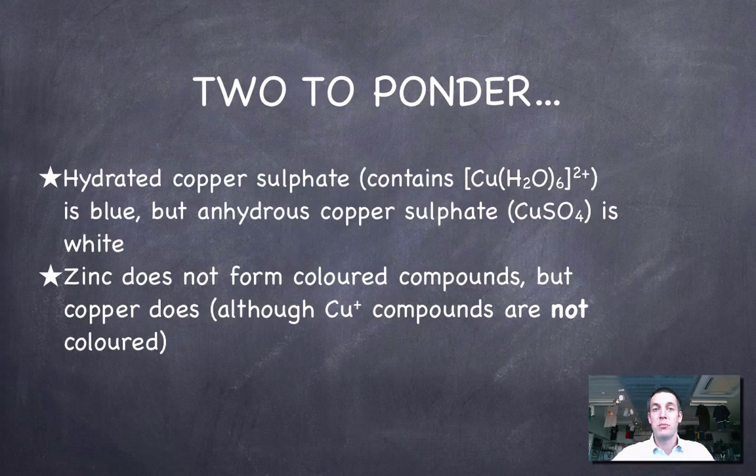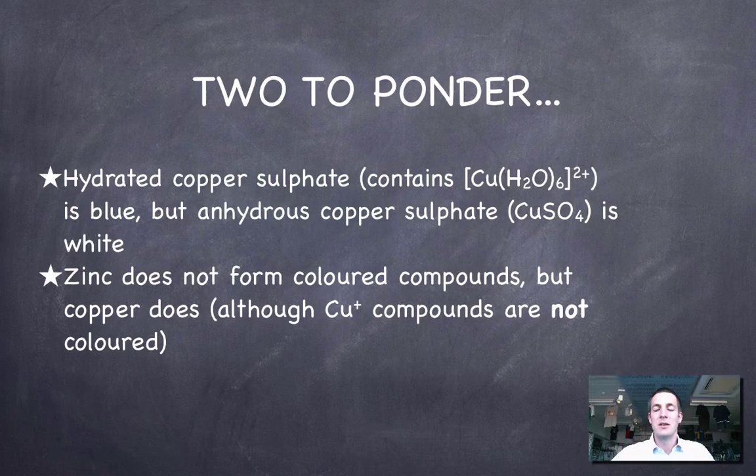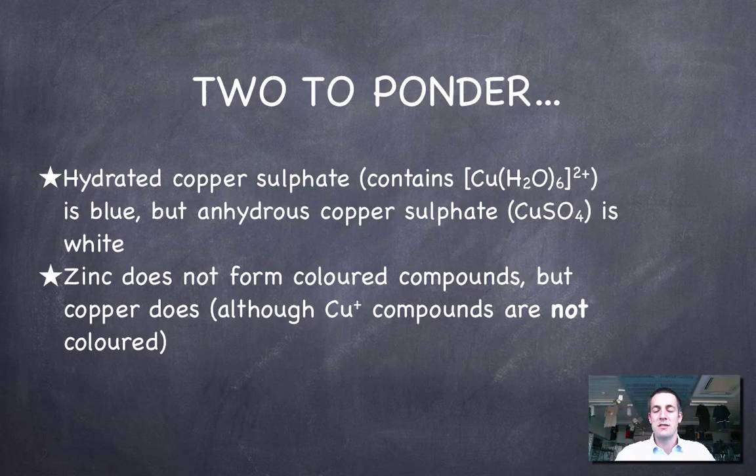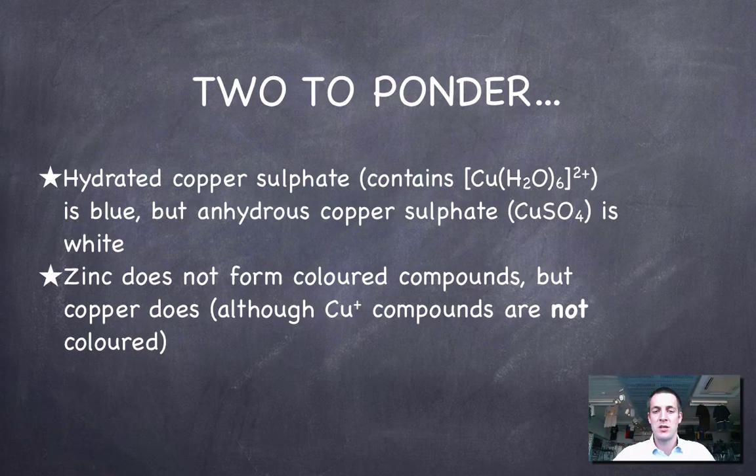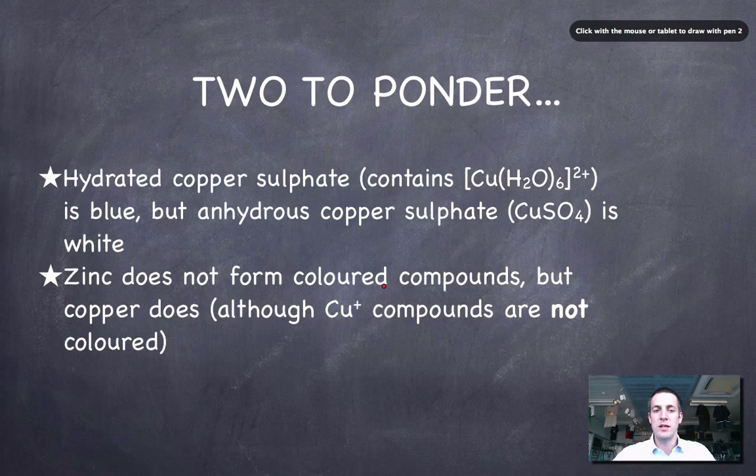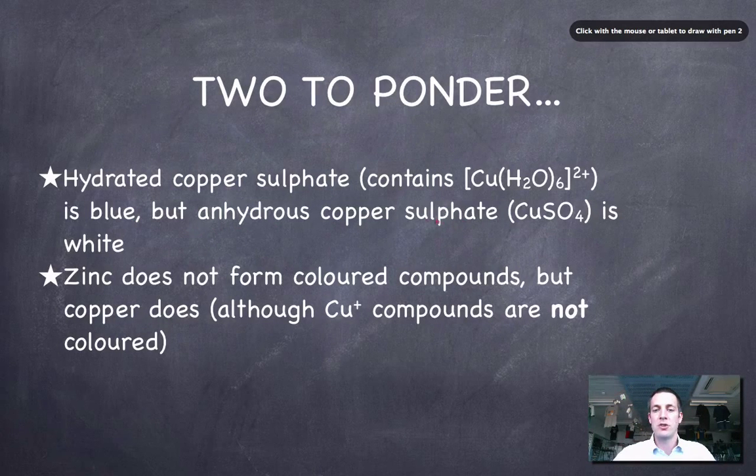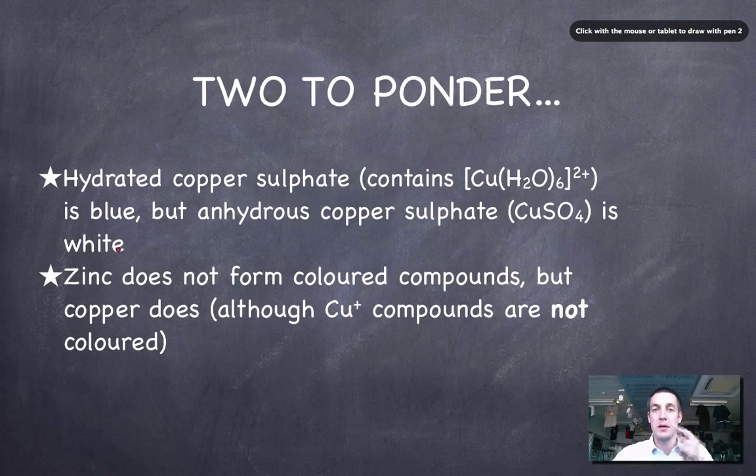Here's a couple of things for you to ponder as we finish the topic. Hopefully, your understanding is good enough that you can understand why it is that these two compounds that contain copper-2 ions, why one is blue, that is to say it's colored. So hydrated copper sulfate is blue. It's got a color. But anhydrous copper sulfate is white. It doesn't have a color. In other words, it doesn't absorb any colors of light.